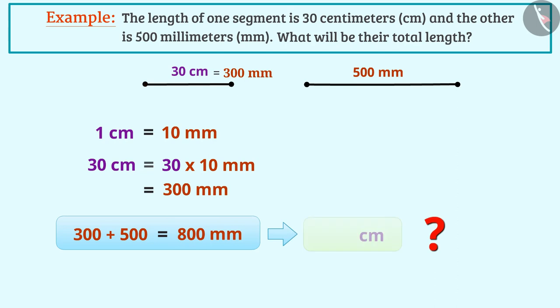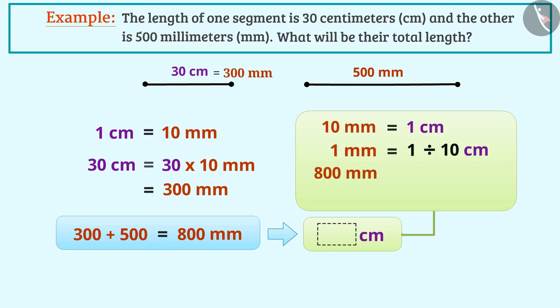If we have to change this solution in centimeters, what will we do? Now, 10 mm is equal to 1 cm. So, 800 mm will have 800 divided by 10 cm, i.e. 80 cm.